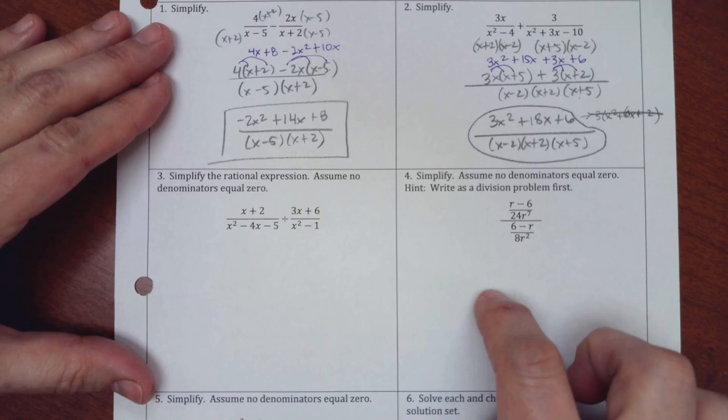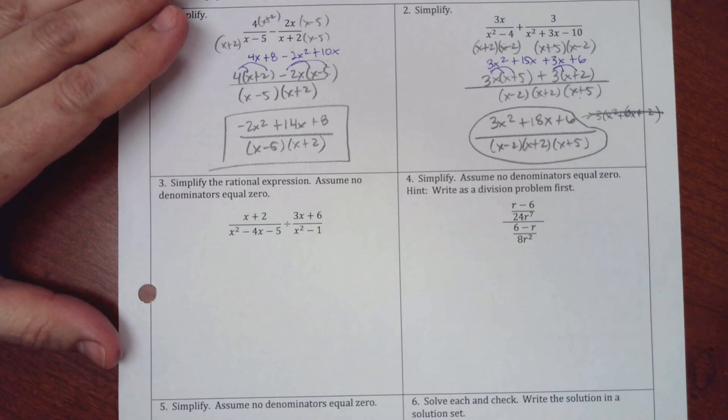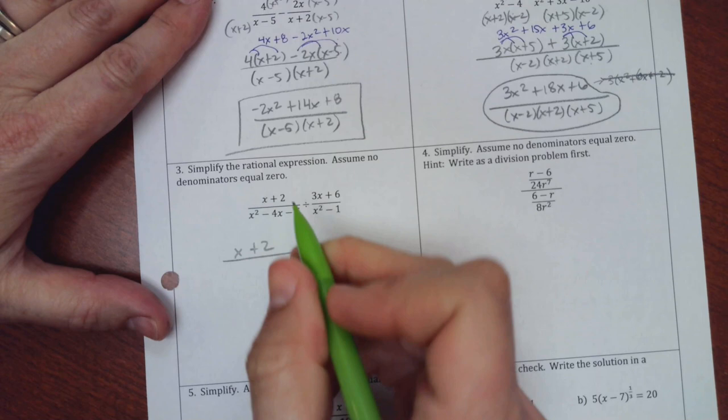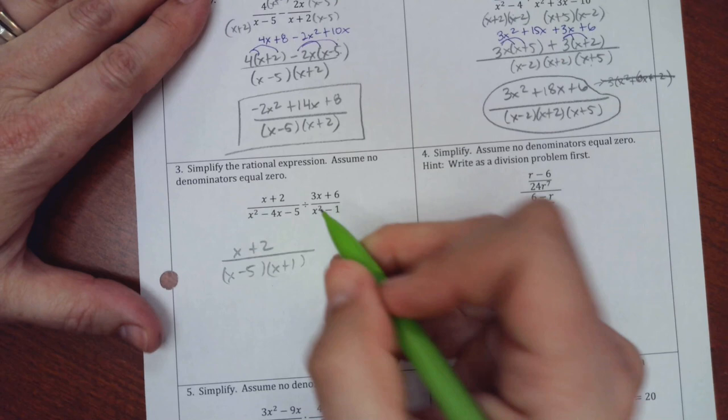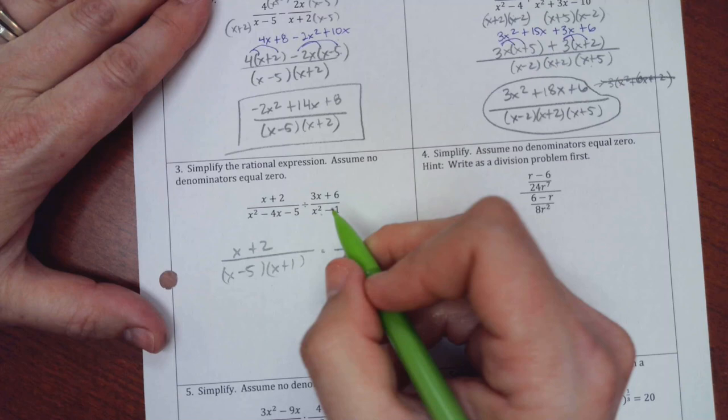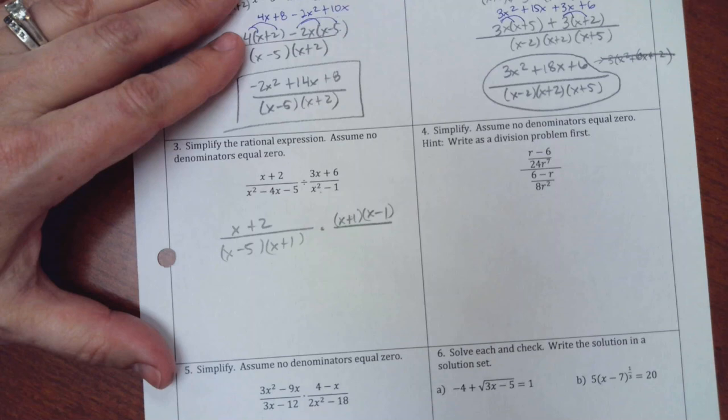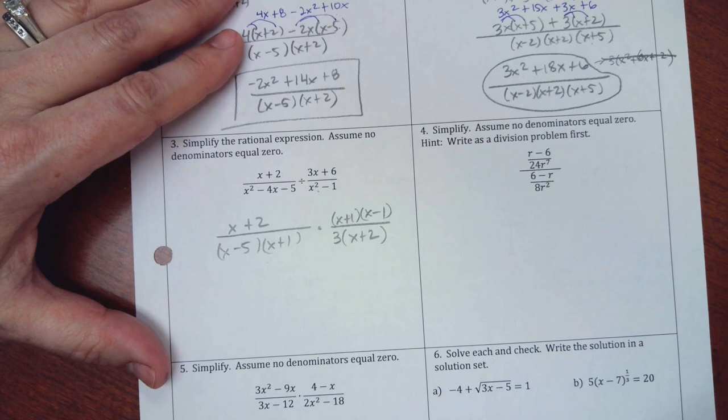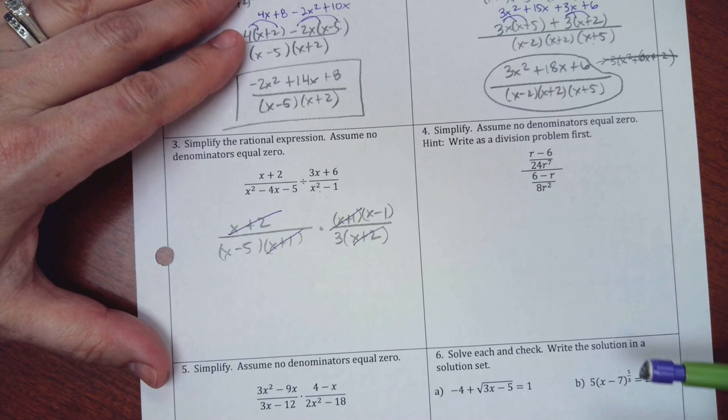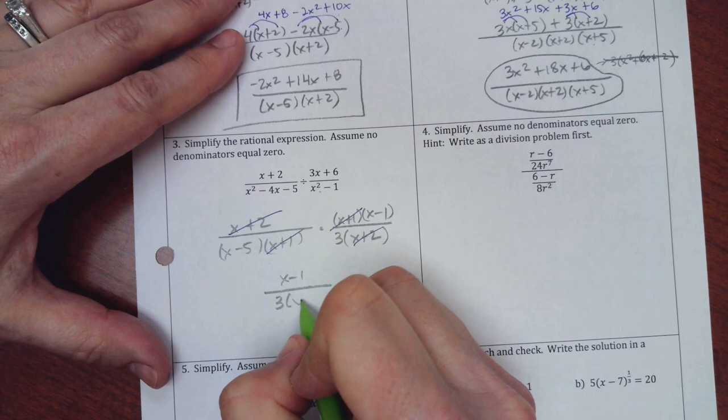Down here we got two division problems. When you do these, let's factor everything up. This x plus 2 is not going to change, but down here what multiplies to 5 and makes 4 is x minus 5 and x plus 1. As I flip this around, I'm going to change it to multiplication. This is going to be on top now. So the numerator, I'm going to factor that as perfect squares, so x plus 1 and x minus 1. And then this 3x plus 6 is going down here, but don't forget, they have a 3 in common, so you have to take that out. So divide a 3 out, you would get x plus 2. And now you start to see some canceling. So x minus 1 is all by itself. On the denominator, I have a 3 and an x minus 5.